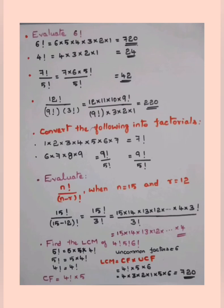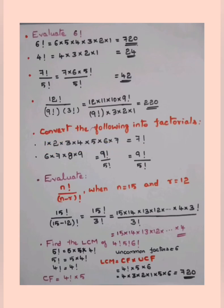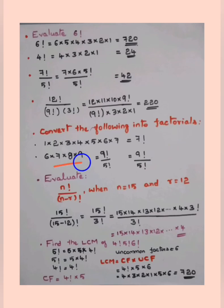Convert the following into factorials. Given 1 × 2 × 3 × 4 × 5 × 6 × 7, reading in reverse order you can write this as 7!. If given 6 × 7 × 8 × 9 — which does not end with 1 — take the highest number as the factorial and divide by the factorial of the number before it starts. So 6 × 7 × 8 × 9 = 9! / 5!, because writing 5! in the denominator cancels the lower terms.